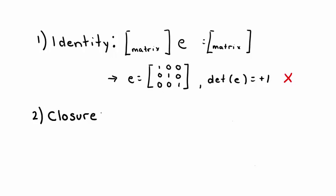We'll actually find that closure fails, too. Let's combine some matrix, we'll call it R1, with another matrix, which we'll call R2. The requirements for this set demand that both matrices have a determinant of negative 1.